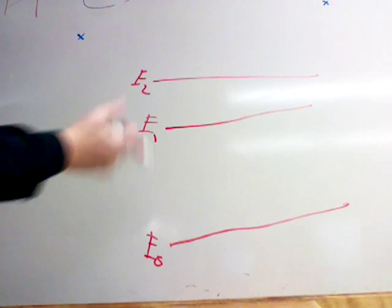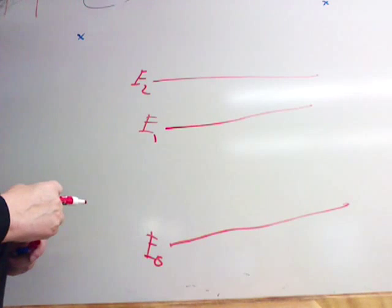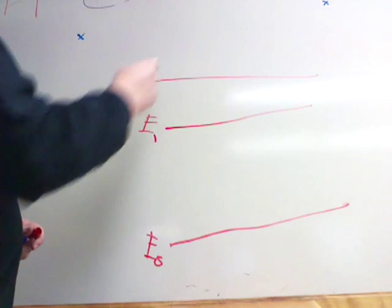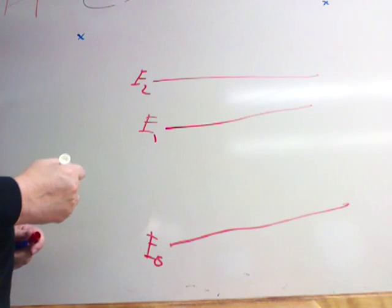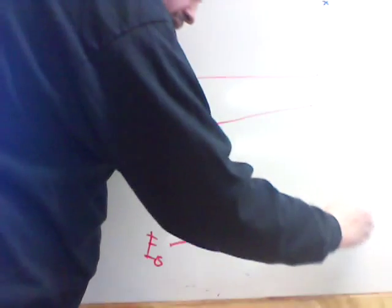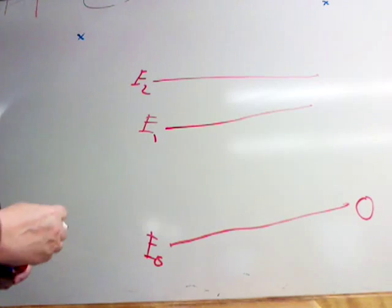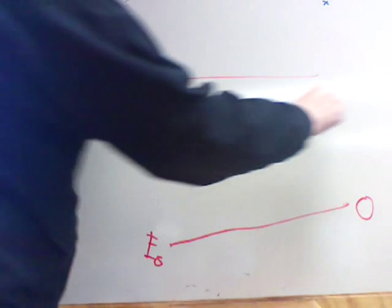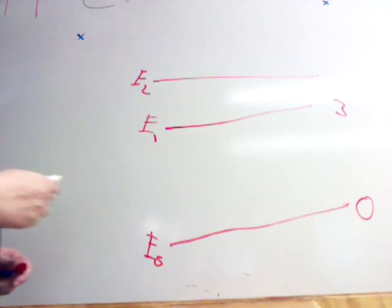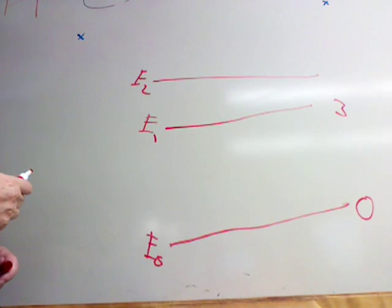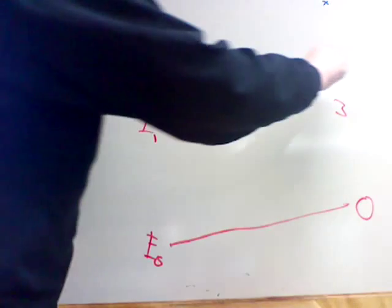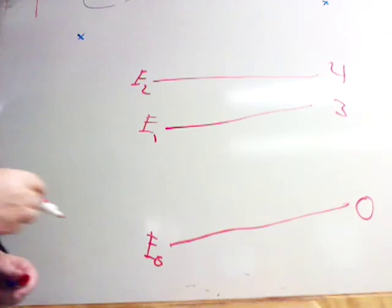In general it's true that even though this is a fake atom, for every atom the spacing between the energy levels decreases as you get to higher and higher energy levels. So the ground state by definition has an energy of zero. Let's say that E one has an energy of three units above the ground state, and let's say E two has an energy of four units above the ground state.